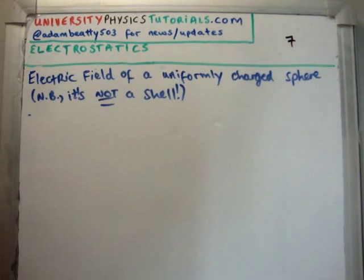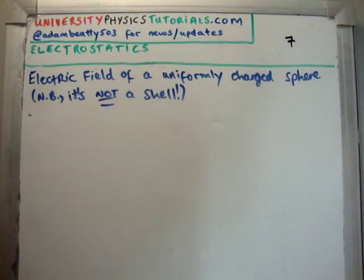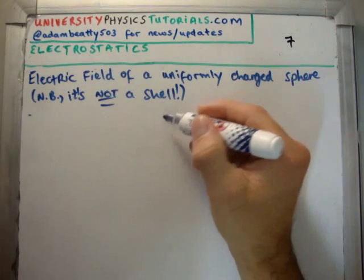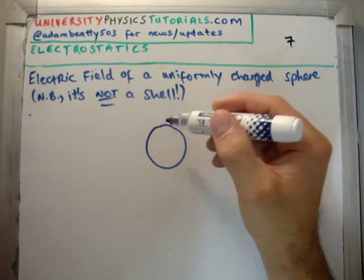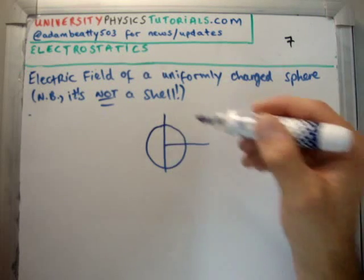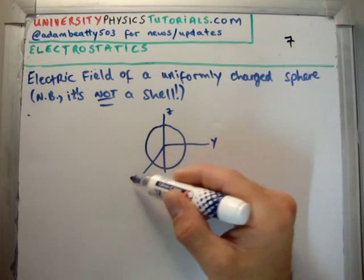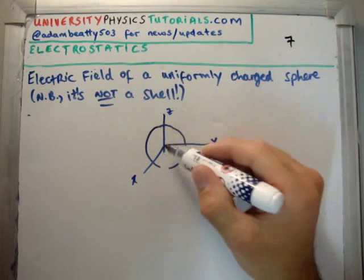In the video on the charged conducting shell, we found the following. We had a sphere, which was a shell, of course. We defined our z-axis, our y-axis and our x-axis.